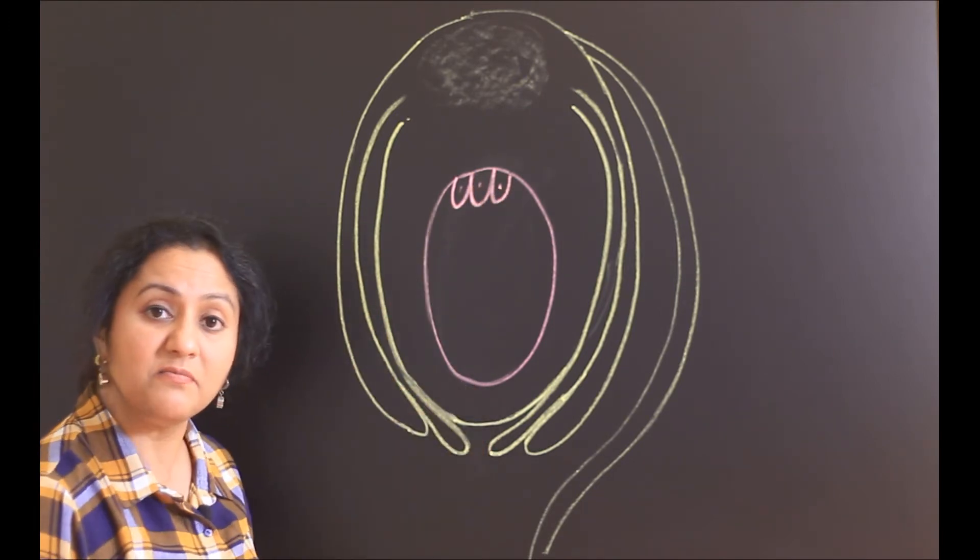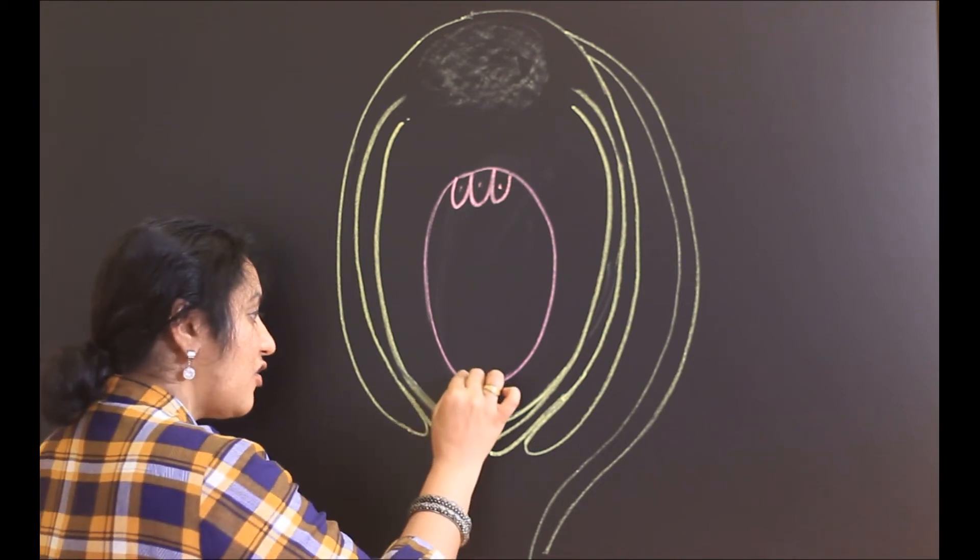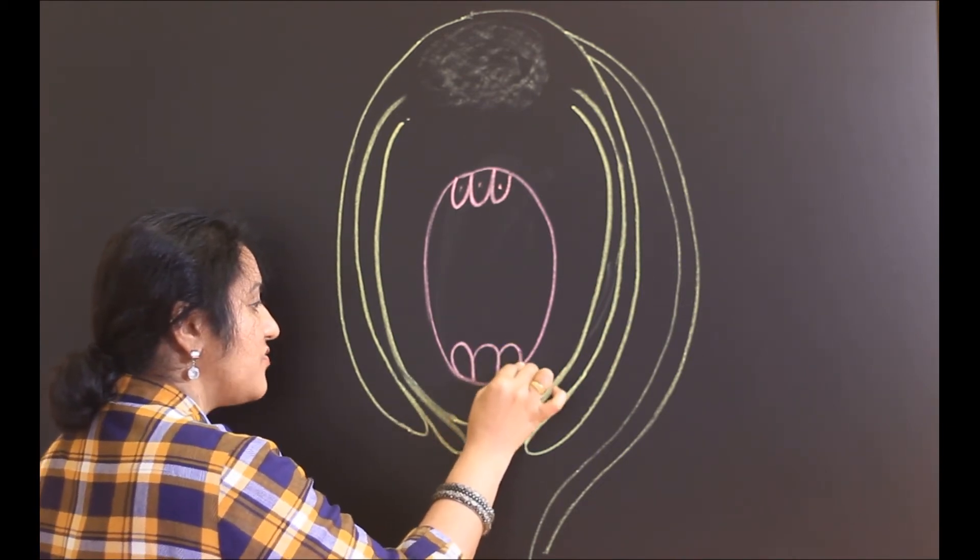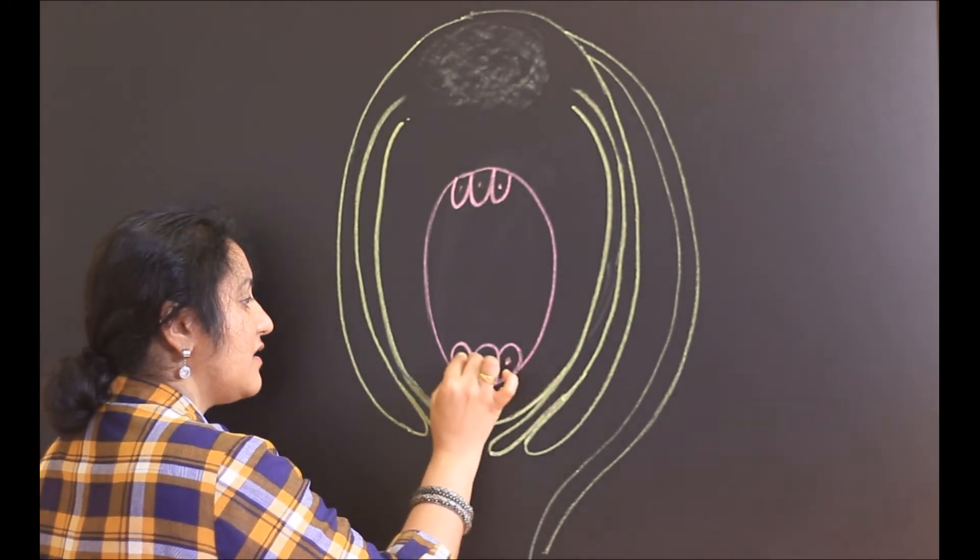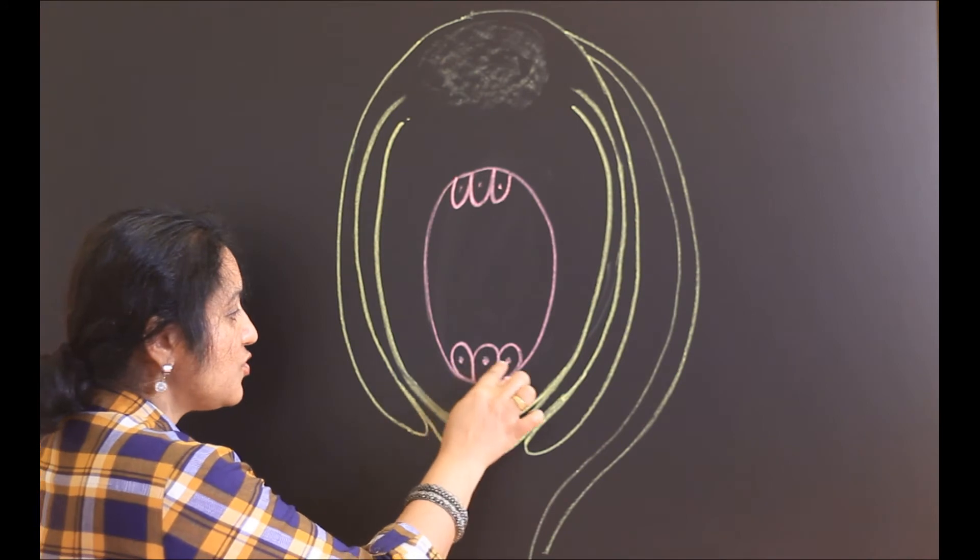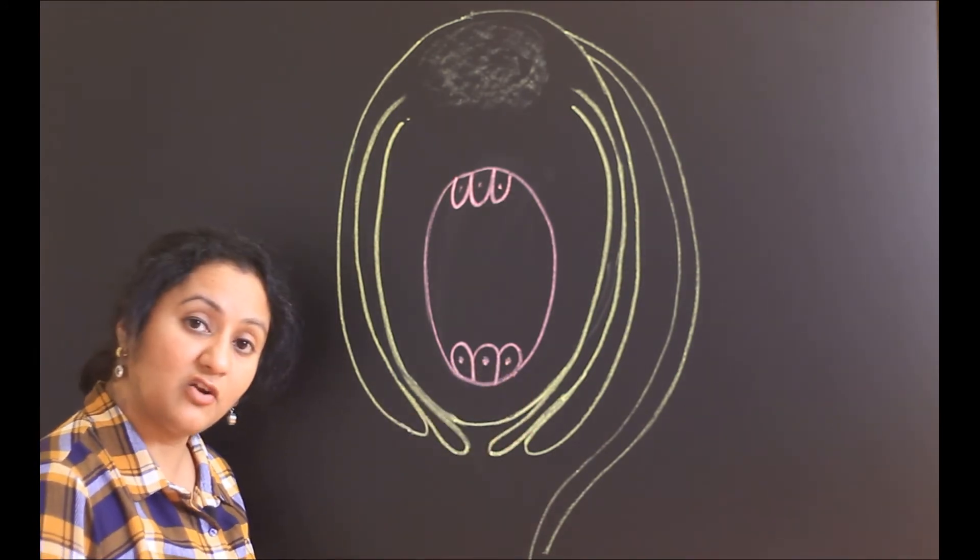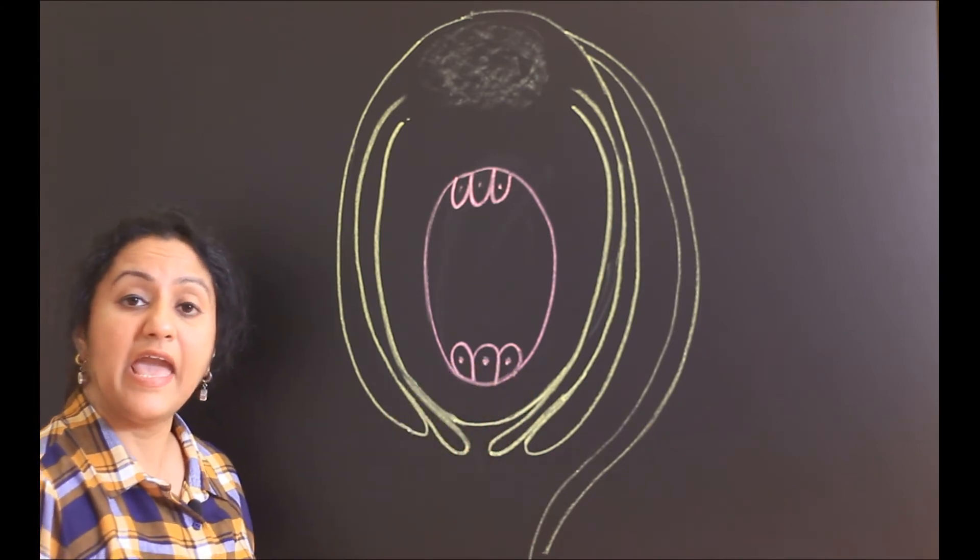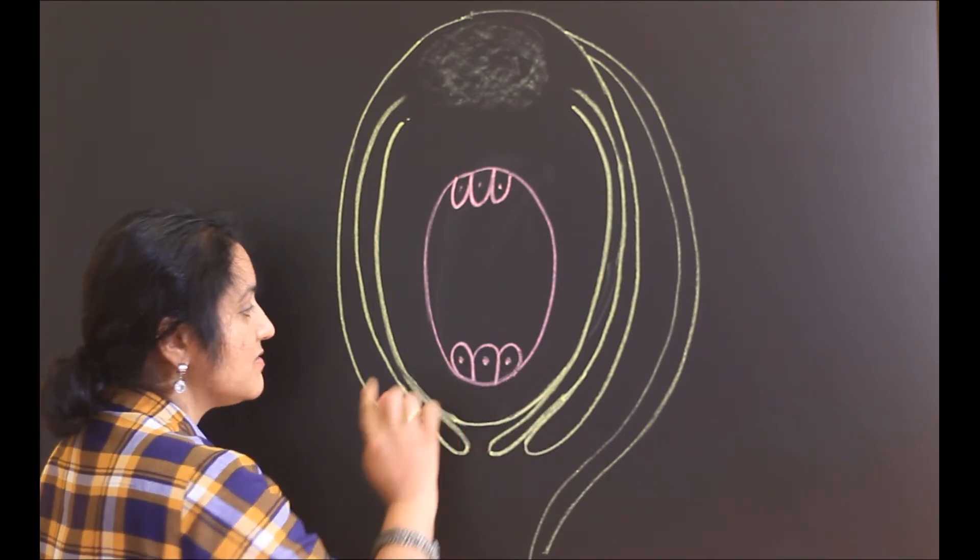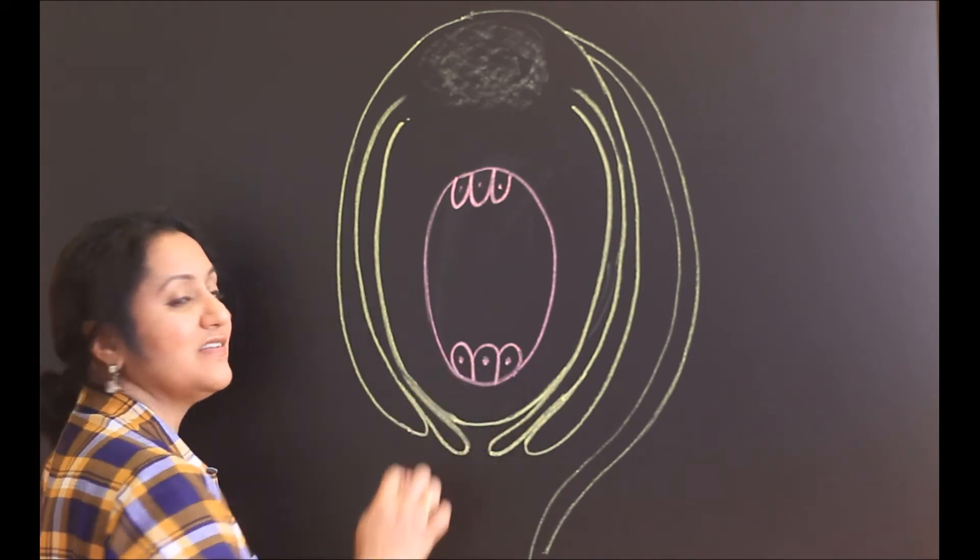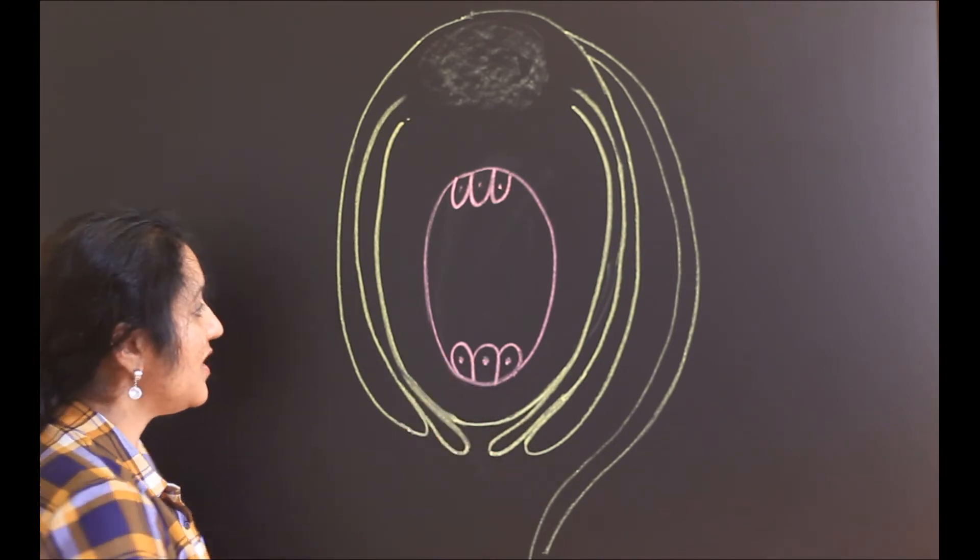What is there here in the micropyle region? There also, there are three cells. One, two and three. These two are called as synergids that also will degenerate after fertilization and this center one is actually the egg cell. This entire group of three cells is called as egg apparatus because right in the center there is an egg.